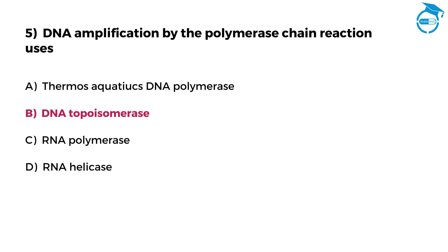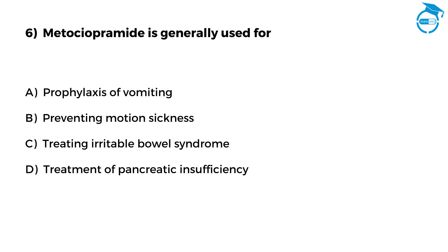Few more questions left. Let's move ahead and take the challenge. Metoclopramide is generally used for. Option A, prophylaxis of vomiting. Option B, preventing motion sickness. Option C, treating irritable bowel syndrome. Option D, treatment of pancreatic insufficiency.